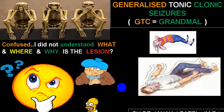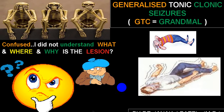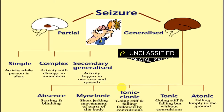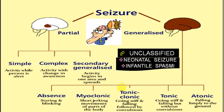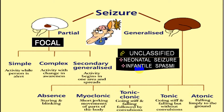So, generalized tonic-clonic seizure, or GTC, or Grandmal Epilepsy. Seizures we can divide into partial and generalized. Partial can be simple partial, complex partial, and then it becomes secondary generalized. While generalized is classified into absence seizure, myoclonic seizure, generalized tonic-clonic, generalized tonic, and atonic variety. There is a third group called unclassified, which includes neonatal seizures or infantile spasms. Partial is also called focal.